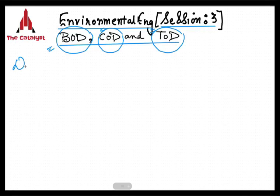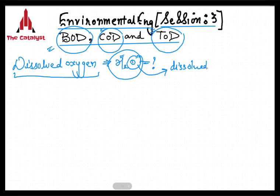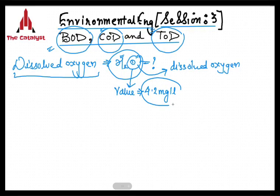First, let's understand a term known as dissolved oxygen. If you talk about water, you know the formula is H2O — water contains hydrogen and oxygen. Dissolved oxygen is the oxygen which is dissolved in the water. Dissolved oxygen has a value that should be at least 4.2 mg per litre — this is the concentration in mg per litre — for the survival of aquatic animals.